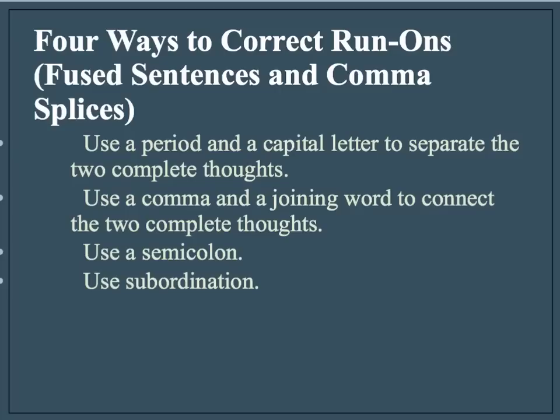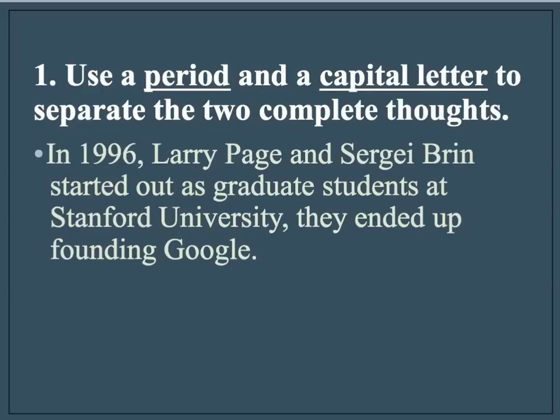So, now that we know how to find fused sentences and comma splices, how can we correct them? There are four ways. You can use a period and a capital letter to separate the two complete thoughts. You can use a comma and a joining word to connect the two complete thoughts. You can use a semicolon. Or you can use subordination.